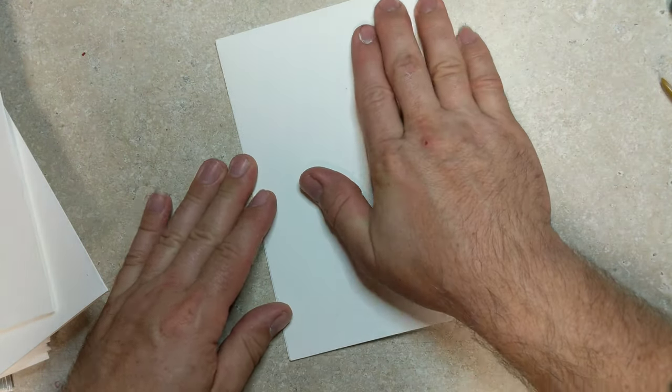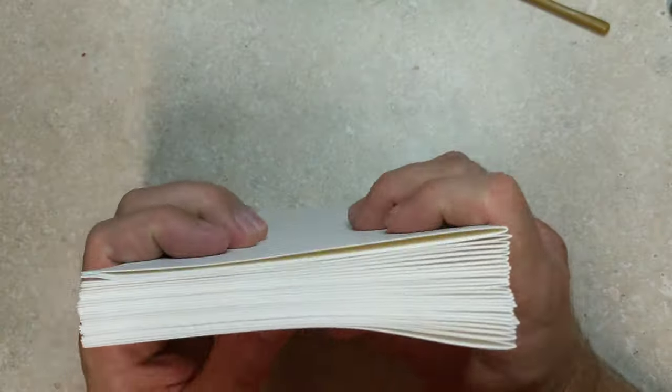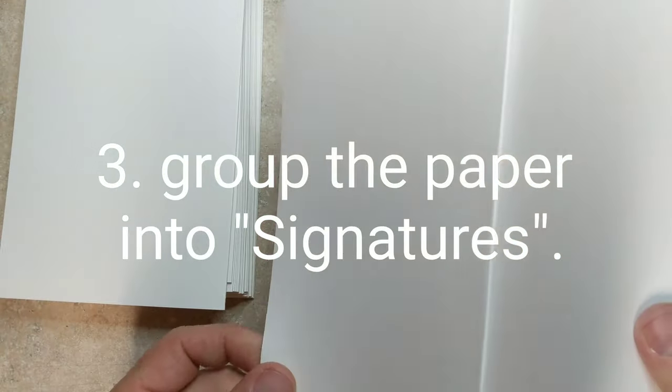And every time I fold it in half, I take my little bone folder or spoon or whatever you want to use and press it down and give it a nice crease. I did this individually for all 25 sheets that were in the watercolor pad. If I fold it in half, that gives me like 50 pages.